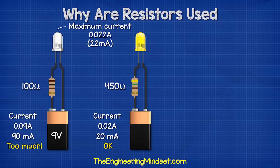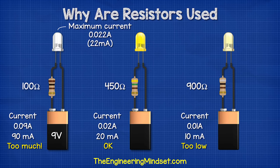If we use a 450-ohm resistor, then the current is 0.02 amps, which is below the limit, so that should be okay. If we use a 900-ohm resistor, then the current is 0.01 amps, which is far too low, so the LED will not shine brightly.